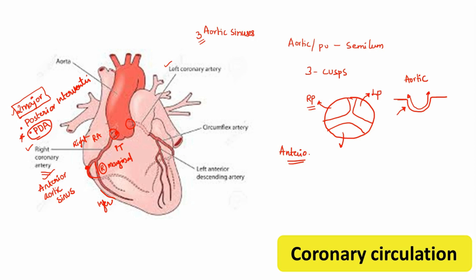After understanding the origin, course, and branches, the area supplied by the right coronary artery is predominantly the right atrium and the major part of the right ventricle. An important take-home point is that it predominantly supplies the conducting system of the heart — the SA node, AV node, Purkinje fibers, and bundle of His. The conducting system of the heart is supplied by the right coronary artery.